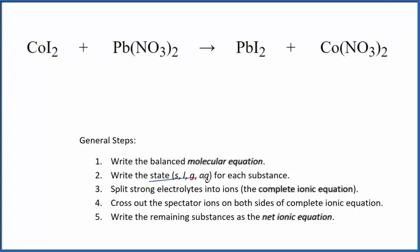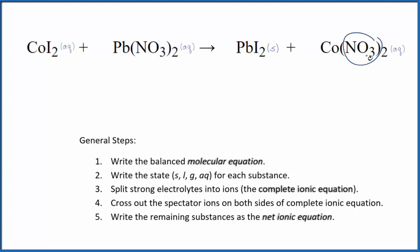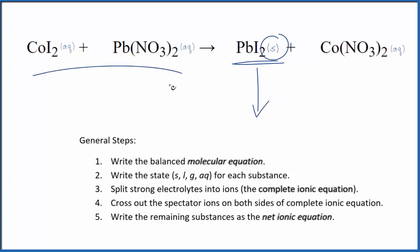Next, we need to write the state for each substance, and that looks like this. In general, compounds with the iodide ion are soluble, though there are a few exceptions. Lead-2 nitrate — nitrates are very soluble — so cobalt-2 nitrate is going to be soluble. The exception for the iodides: lead-2 iodide, this is one to remember, it is going to be insoluble. So it's a solid here, and that means it's going to be a precipitate. It'll fall to the bottom of the test tube when these two substances react.